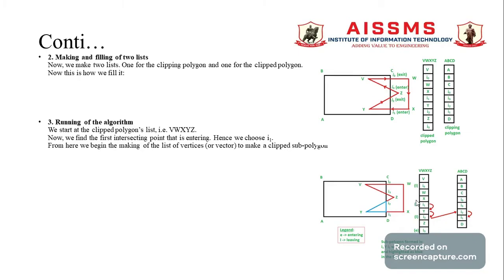The next step is to make two lists: the clip polygon list and the clipping polygon list. For the clip polygon list V W X Y Z, we fill it as: V, i0, W, X, i1, Y, i2, Z, i3. For the clipping polygon A B C D, the coordinates are filled as: A, B, C, i0, i3, i2, i1.